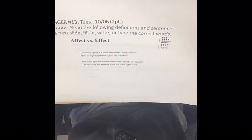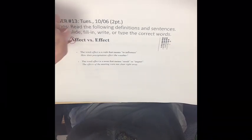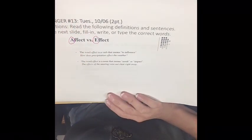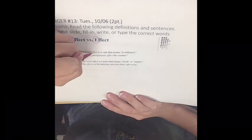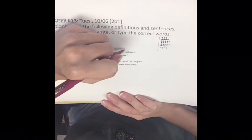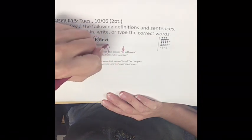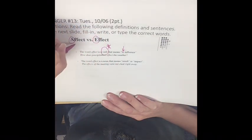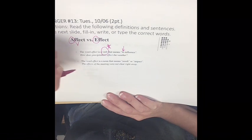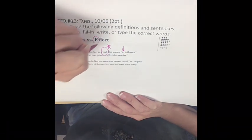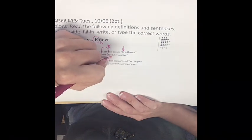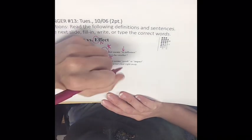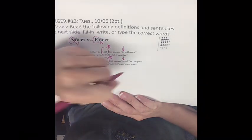For Tuesday we have affect with an A and effect with an E. The best way to know the difference between the two is: affect with an A is a verb and it means to influence. Effect with an E is a noun and effect with an E means a result or an impact.